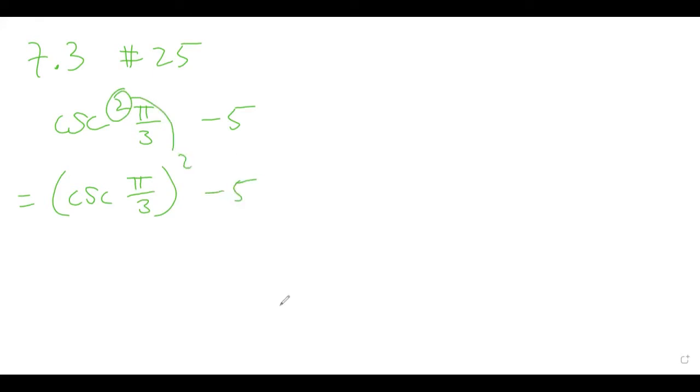Now go to your 6 by 6 table of values from class the other day and recall that the cosecant of pi thirds—let me look at my cheat sheet here—it says that it's 2 square root 3 over 3.